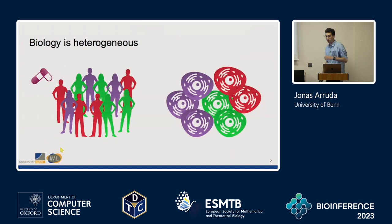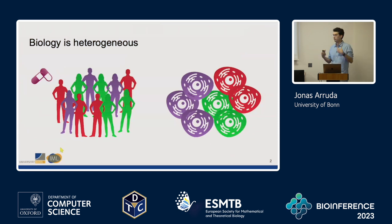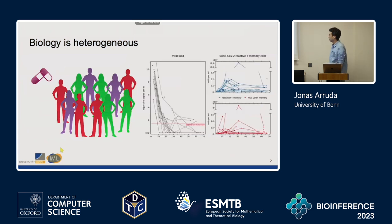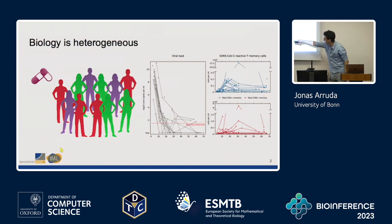Let me jump directly into it. Biology is heterogeneous. If you look around here, each one of us is different. A very prominent example is COVID-19. If you look at how people reacted to a COVID-19 infection and how the viral load in our bodies could be measured in those different individuals, you see they are very different.